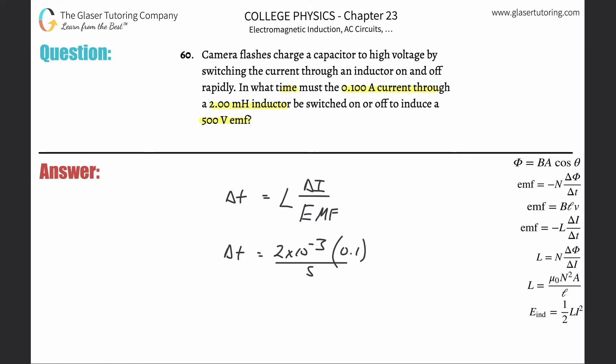So plug and chug: 2 times 10 to the minus 3 times 0.1 divided by 500. 4 times 10 to the minus 7th.